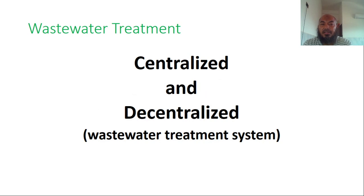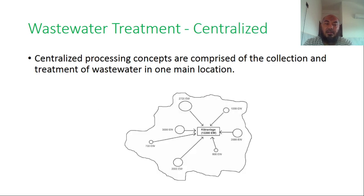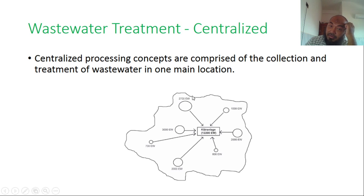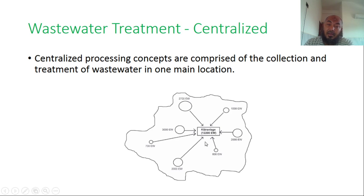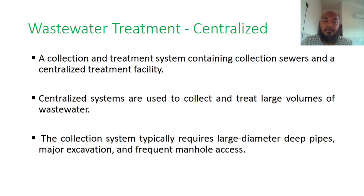We move to centralized and decentralized wastewater treatment systems. The centralized process concept comprises collection and treatment of wastewater in one main location. There are many housing areas, and the waste from each housing area is collected in one central place — for example, 2,700 PE, 3,700 PE — so all of this comes to one place, giving a total capacity of about 12,200 PE.